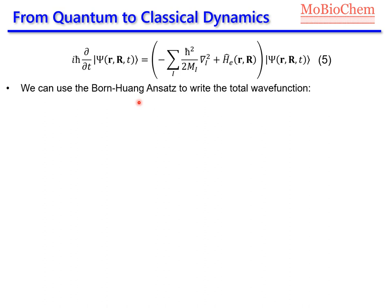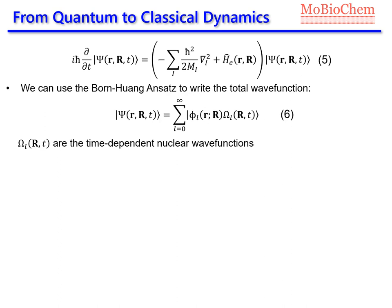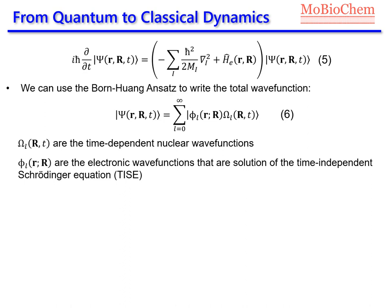In order to develop this equation, we will use the Born-Huang formulation to write the total wave function. The total wave function can be written as a linear combination of electronic wave functions multiplied by some time-dependent coefficients, which represent the nuclear wave function. The electronic wave functions phi_L are the solutions of the time-independent Schrödinger equation, where the electronic Hamiltonian acting on the electronic wave function equals the electronic energy multiplied by the electronic wave function.